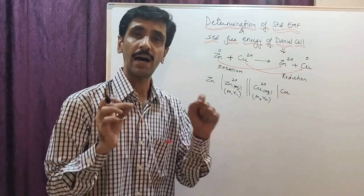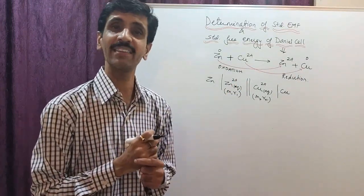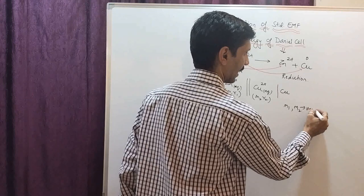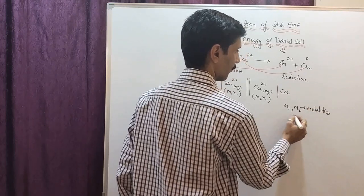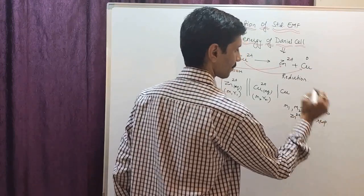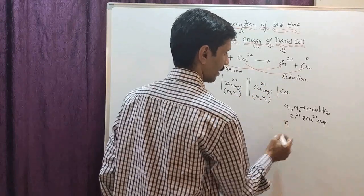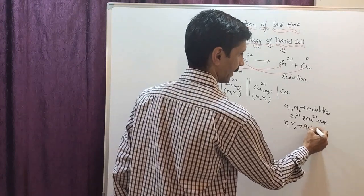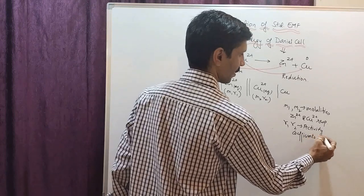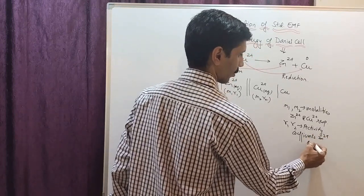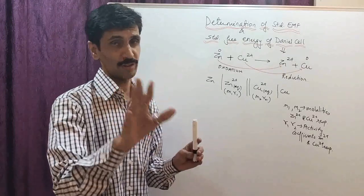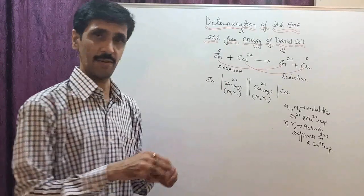M1 and M2 are the molalities of Zn²⁺ and Cu²⁺ respectively. γ1 and γ2 are the activity coefficients of Zn²⁺ and Cu²⁺ respectively. These concepts — activity coefficients and molalities — you have already learned in your theory syllabus, so I'm not going to touch on this.